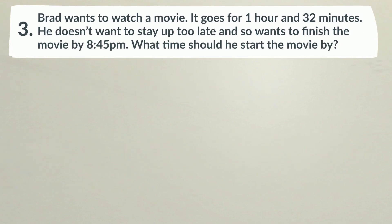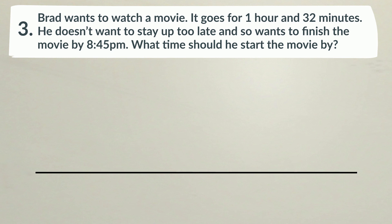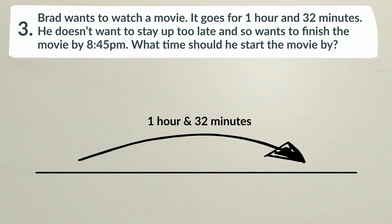Number 3. Brad wants to watch a movie. It goes for 1 hour and 32 minutes. He doesn't want to stay up too late, and so wants to finish the movie by 8:45pm. What time should he start the movie by? We know the elapsed time, 1 hour and 32 minutes, and the end time, 8:45pm. We must work out the start time.